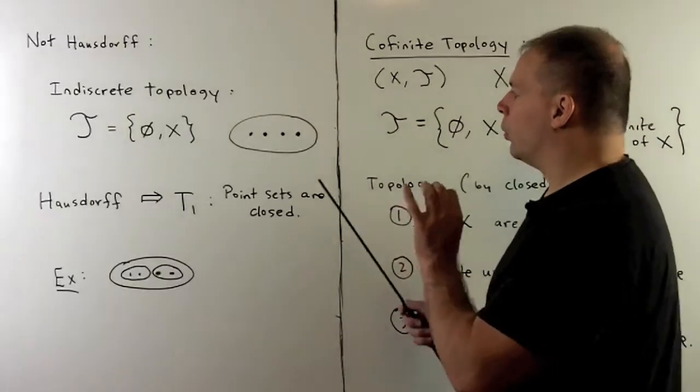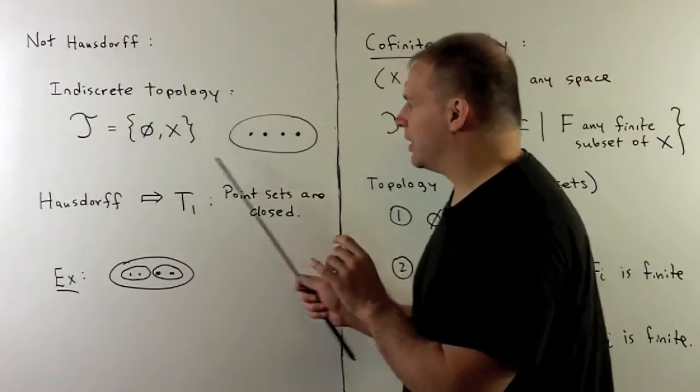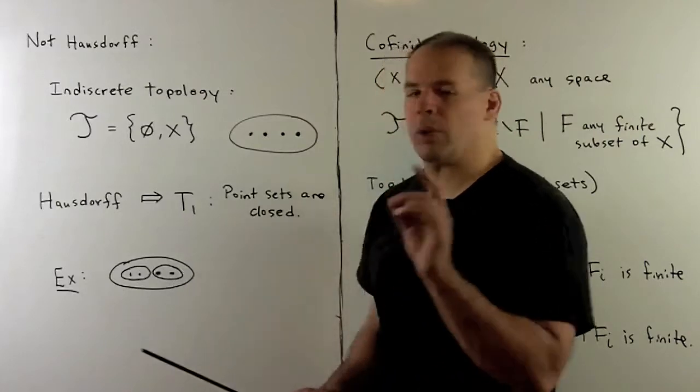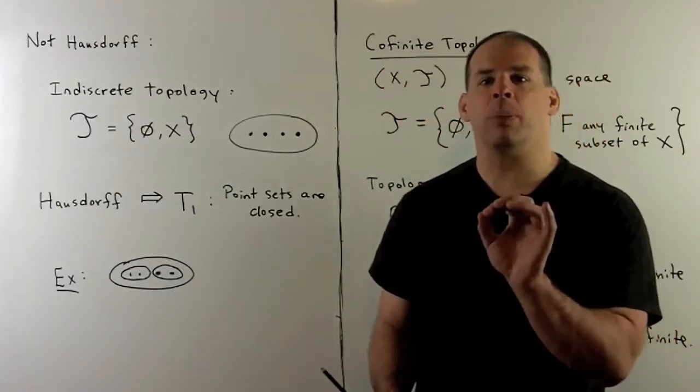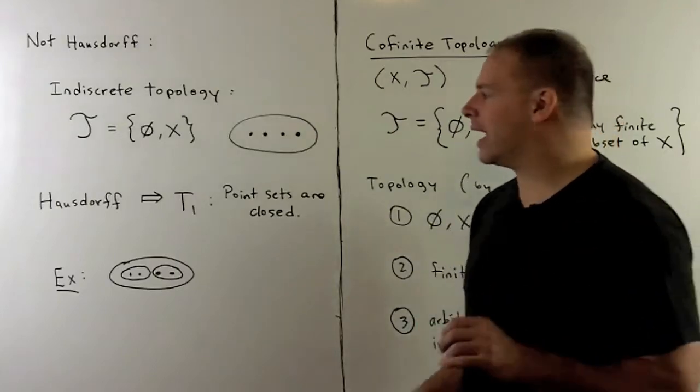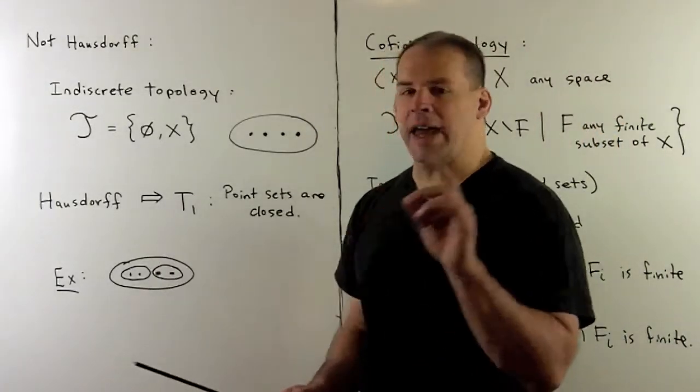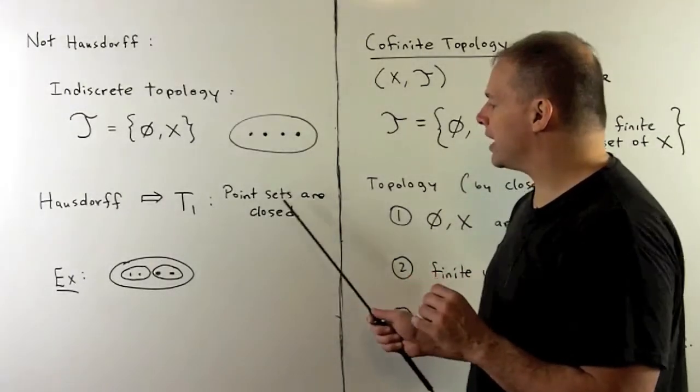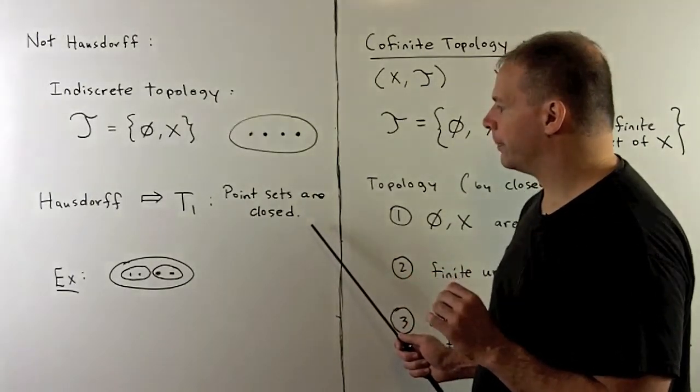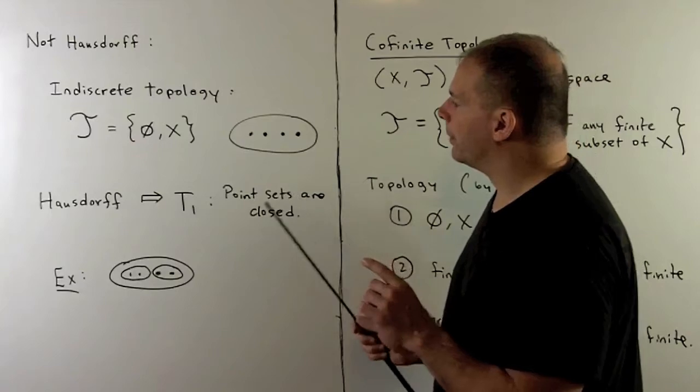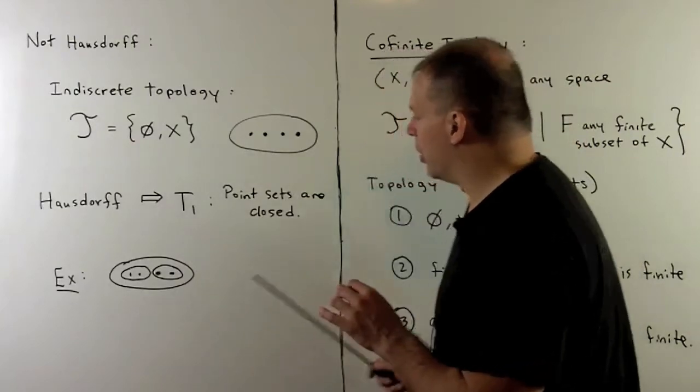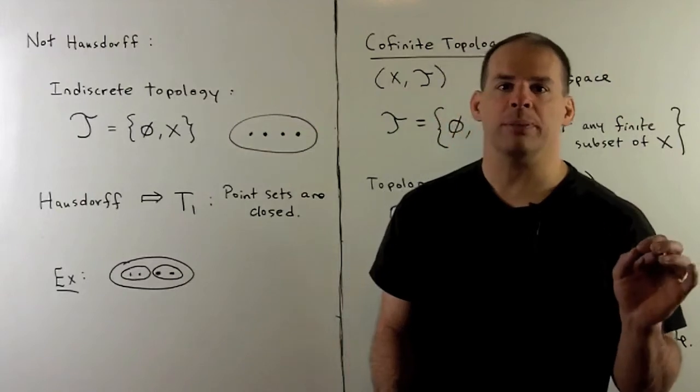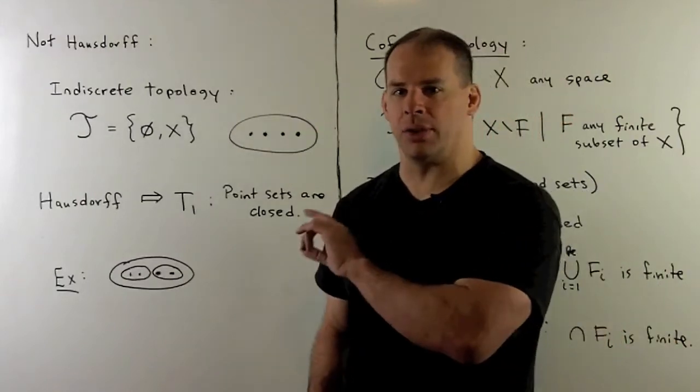If we want to build non-Hausdorff spaces from here, we can keep adding open sets as long as we obey the condition that not all points are closed sets. If we have Hausdorff space, that implies a T1 separation axiom, that point sets are closed. This example gives us an idea of not Hausdorff, but it's not very natural. You're not likely to come across these in the wild.